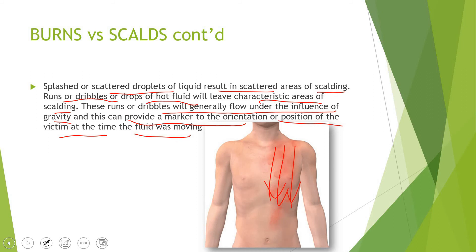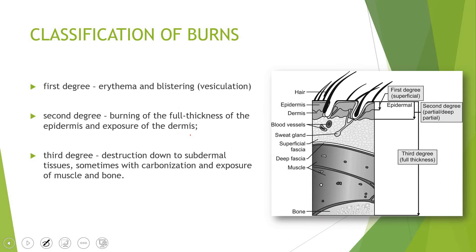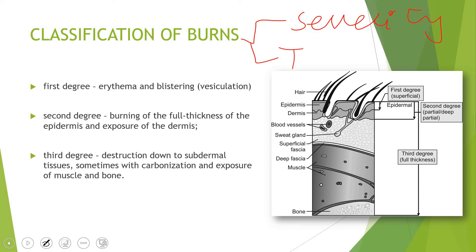The two major differences between burns and scalds are: first, the absence of charring or blackening in scalds; and second, the splashing pattern seen in scalds. Moving on, burns can be classified on two bases: on the basis of severity, and on the basis of the extent of burning — i.e., the total body surface area (TBSA) affected.